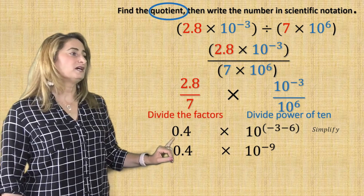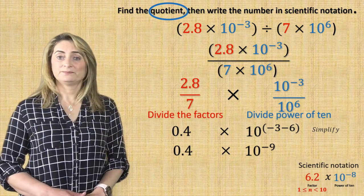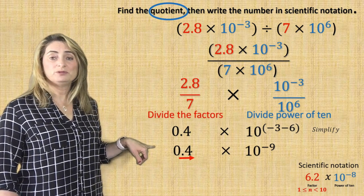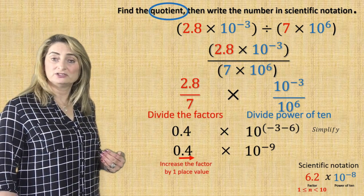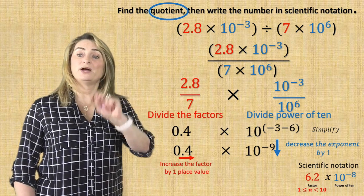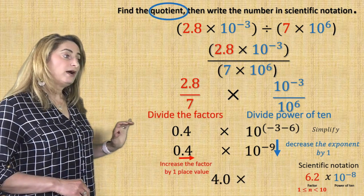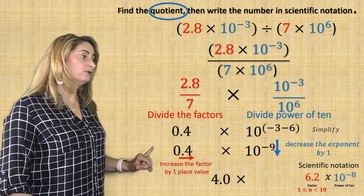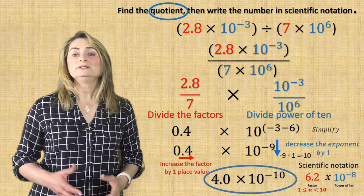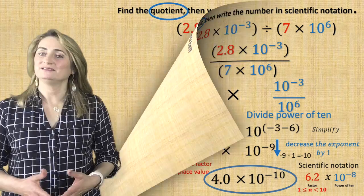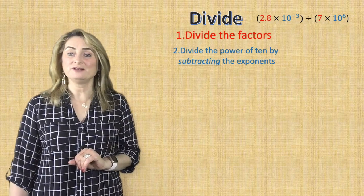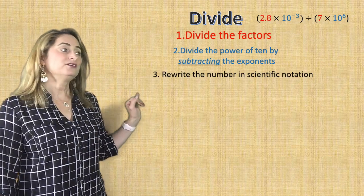Simplify that again. 0.4 times 10 to the power of negative 9, because negative 3 minus 6 is negative 9. Now is this number written in scientific notation? No, because the factor is less than 1, and it should be between 1 and less than 10. I need to increase the factor by 1 place value, which means I have to decrease the exponent by 1 because they have the opposite relationship. After moving the decimal you get 4.0 times 10 to the power of negative 10, since negative 9 minus 1 equals negative 10. Now let's review how to divide scientific notation: divide the factors, divide the power of 10 by subtracting the exponents, then rewrite in scientific notation.